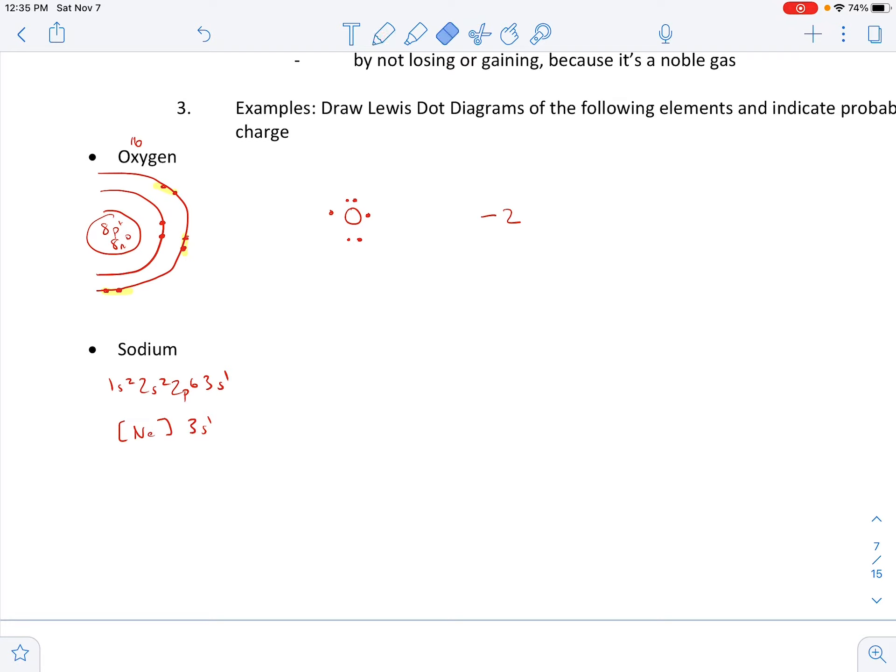So there's only one valence electron. So we're going to put Na with a dot. And that's what we've got. So Na has a choice. It can lose one, becoming positive one, or it could gain seven and become negative seven, which would be easiest. That's right. Losing one. So it's probable charge is plus one.